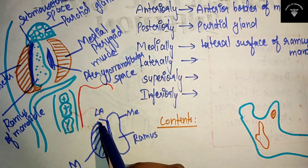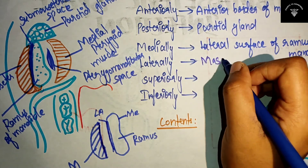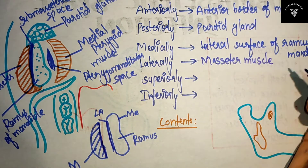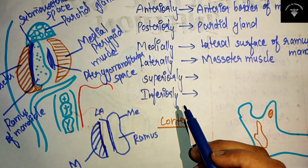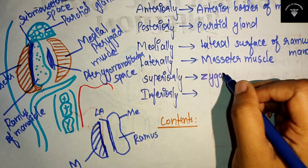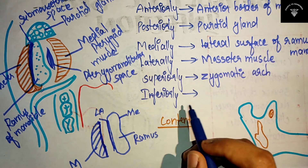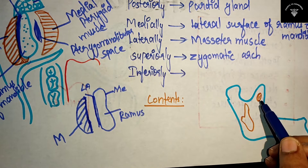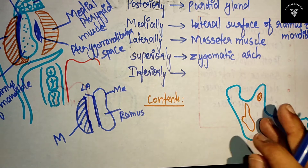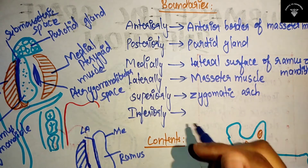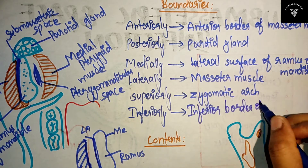What do you have laterally? Laterally you have the masseter muscle. Now moving on to the superior and inferior sides: superiorly you will have the zygomatic arch. And inferiorly — looking at the masseter position — you have the inferior border of the mandible. So inferiorly, write the inferior border of mandible.